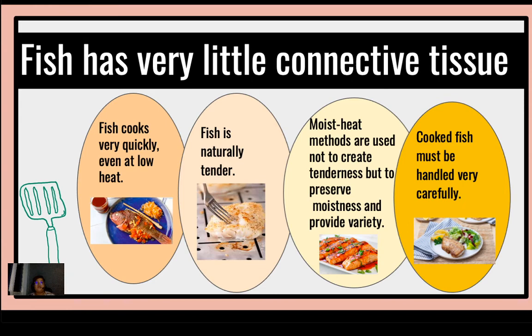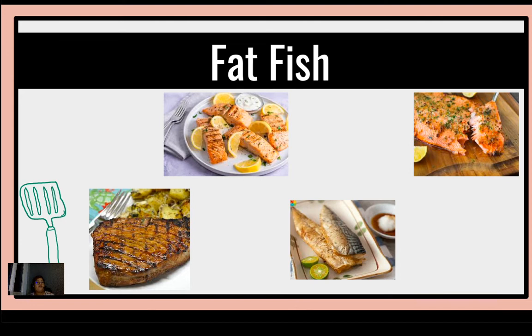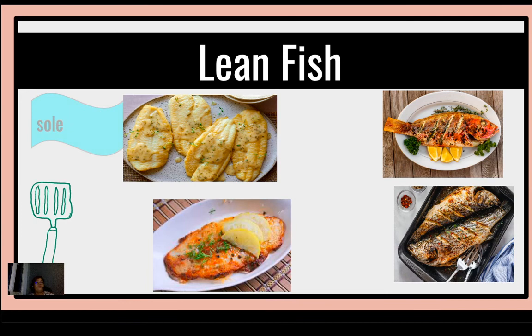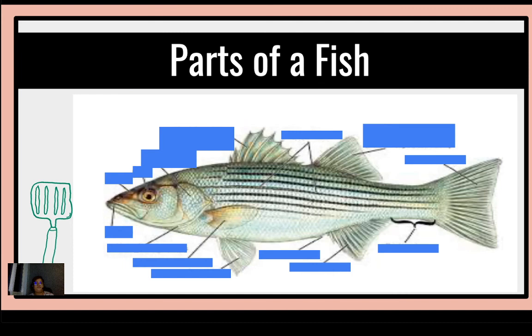Fish should be handled carefully because since they are very tender, they can be easily broken apart. Fat fish are fish that are rich in fat — we have the salmon, tuna, trout, and mackerel. For lean fish, we have the sole, which is rich in protein, along with the cod, the red snapper, and the bass.